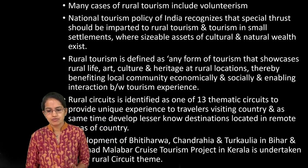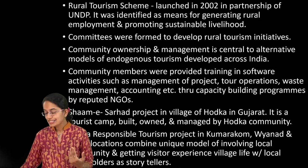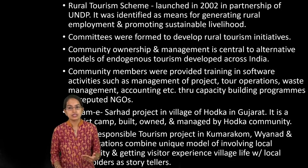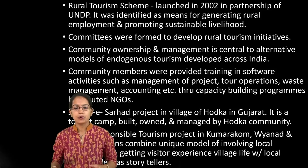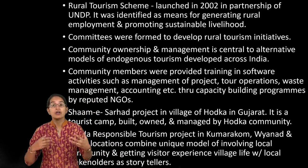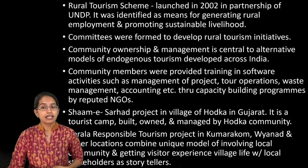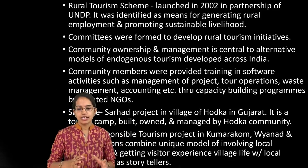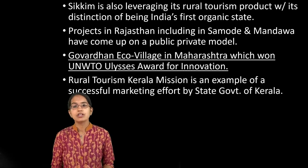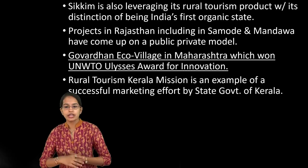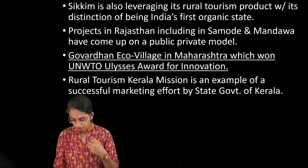There are important projects under the development of rural circuits with a lot of volunteer activity. The national tourism policy enhanced rural tourism through a scheme started in 2002 in assistance with the UNDP, focusing on community ownership. A good example is Sham-e-Sarhad in the Hodka village in Gujarat, where tourist camps are managed by the Hodka community themselves. In Kerala, local traditions are preserved; Sikkim has the first organic estate; Rajasthan has public-private models in Samodha and Mandwara.